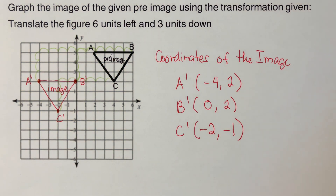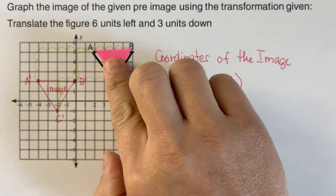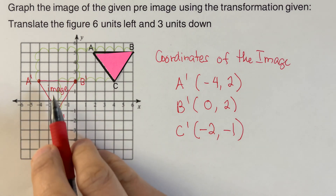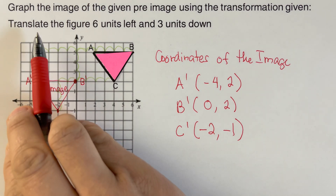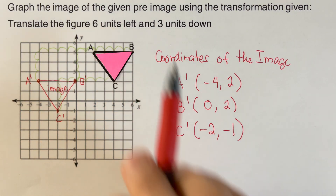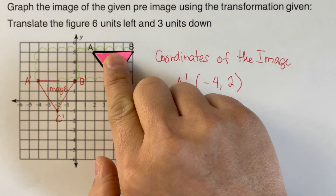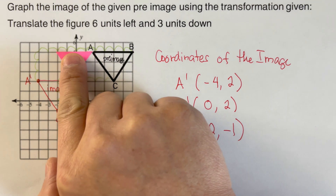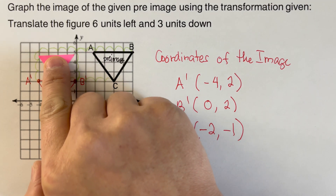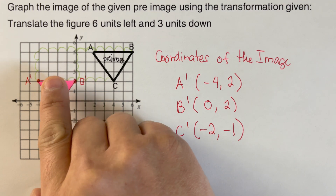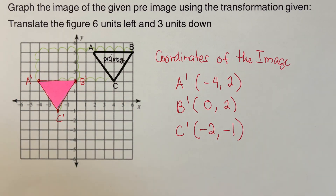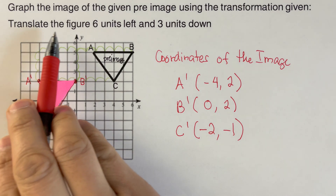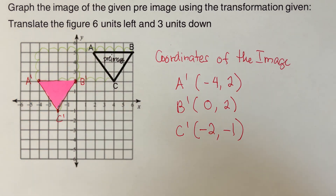We can also test this by putting this triangle right here and testing whether it really sits on this spot when we translate it six units left and three units down. So we go ahead and say six to the left: one, two, three, four, five, six — and then three units down: one, two, three. So the triangle sits on this spot right here after we translated it six units left and three units down. Did you get the same answers as this? Good. Perfect.